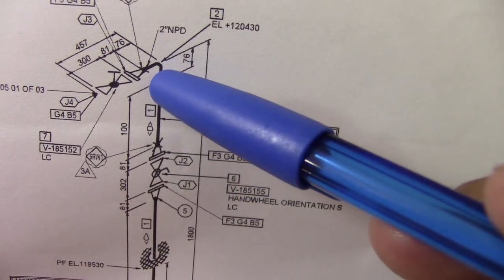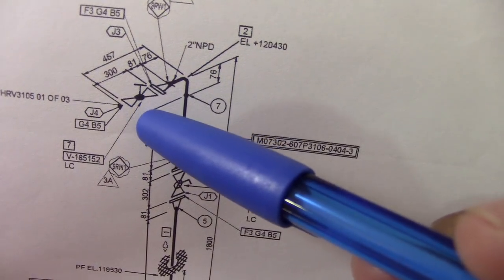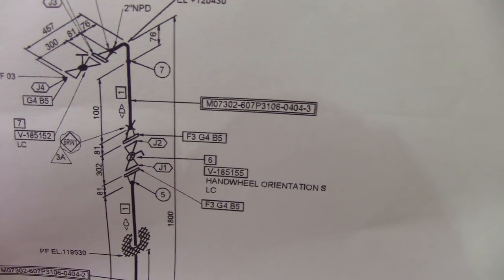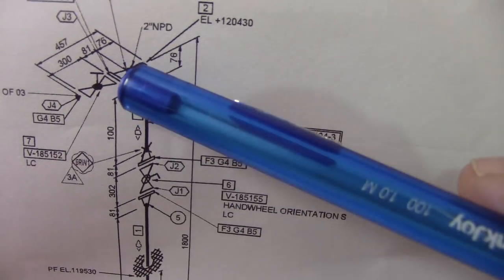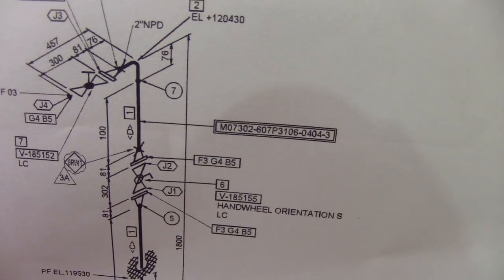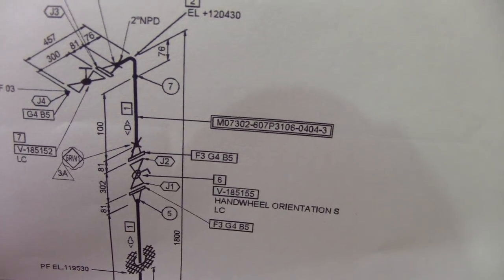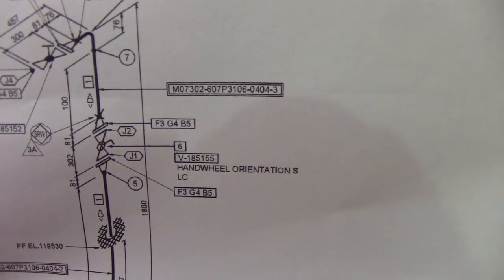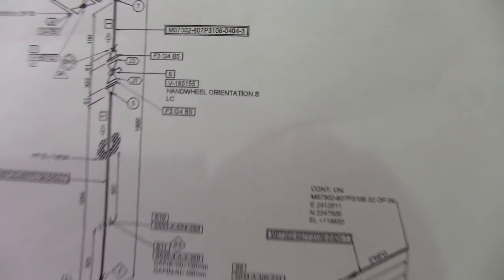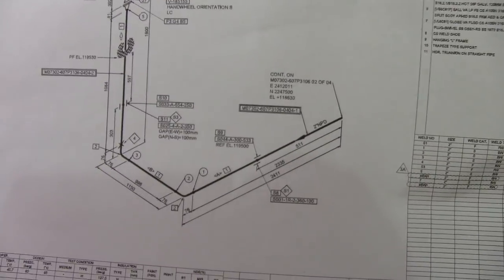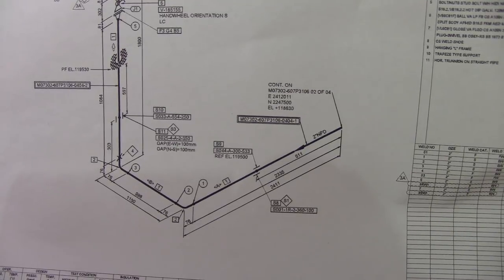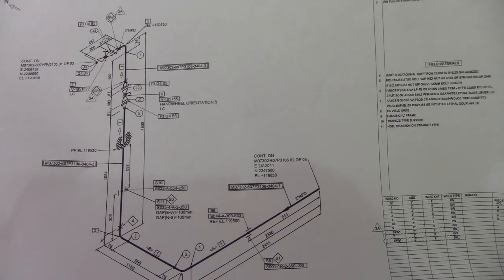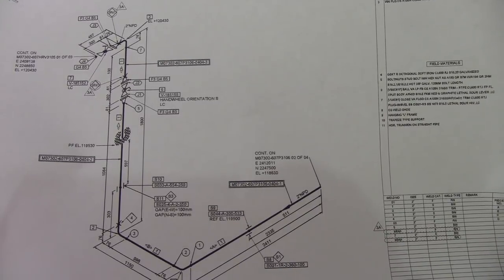This is item number seven — a globe valve. For a globe valve, make sure the flow direction is correct. Check the flow direction; if the flow direction is not correct, put Category A. So it is very simple — that is what Category A and Category B mean in the punchlist. Thanks for watching, have a nice day, see you next time.